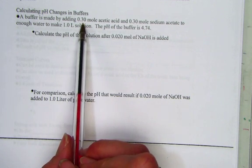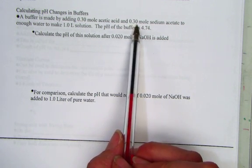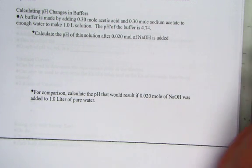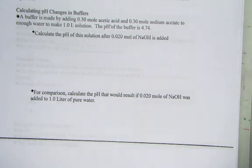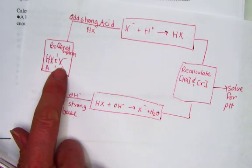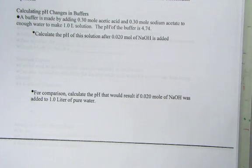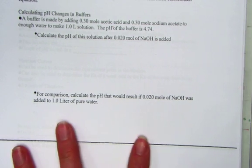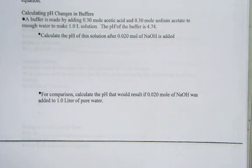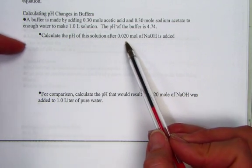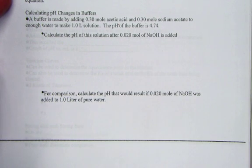A buffer is made by adding 0.3 mol acetic acid to 0.3 mols of sodium acetate. So, here's our acid and its conjugate base. So, visually, this is the system that we're starting with, 0.3 mols of each, of the acid and its conjugate base. We add it to make a 1 liter solution, which is simply saying the molarity. The pH of the buffer is 4.74 units. So, let's calculate the pH of the solution after adding 0.02 mols of our strong base, NaOH.